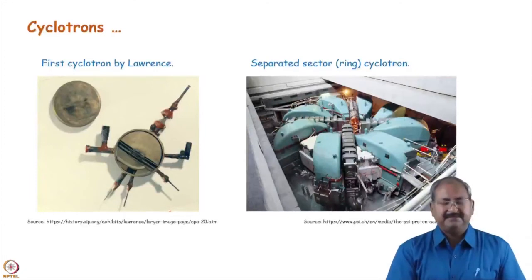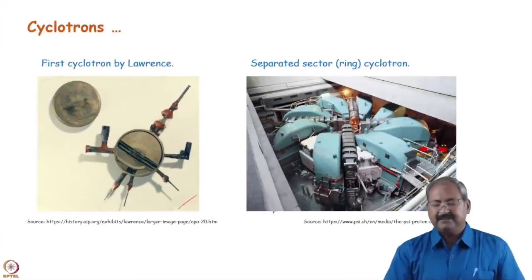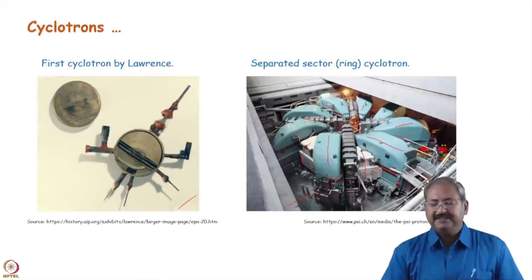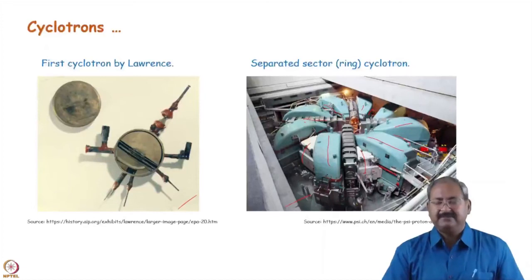This is the picture of the first cyclotron built by the Lawrence and this is the modern cyclotron. You can see that this is the separated sector cyclotron. These are the magnets and here we have the RF cavity space or no magnetic element. This cyclotron is in the TRIUMF Lab of Canada.